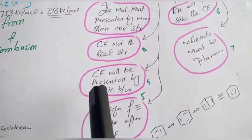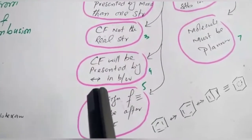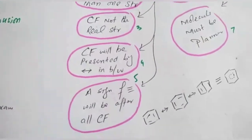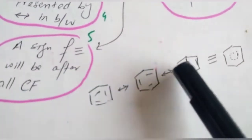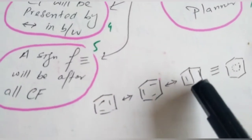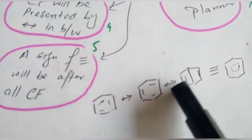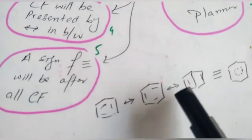While canonical form will be presented by double-headed arrow in between. Just like here, these three are canonical forms and they are presented by double-headed arrow in between.